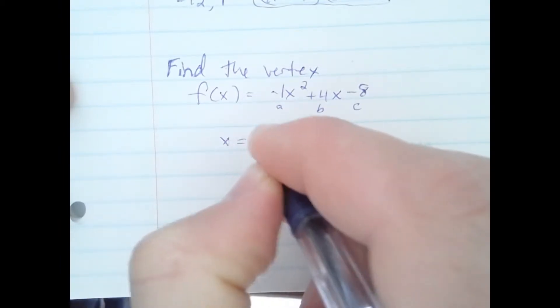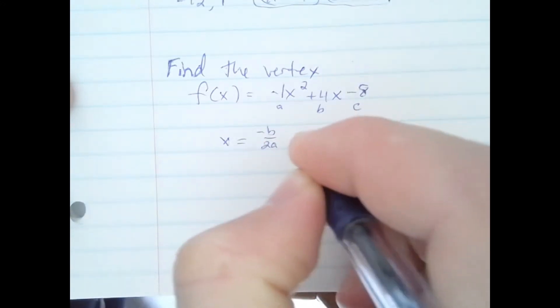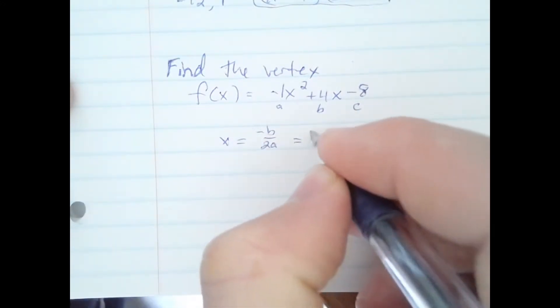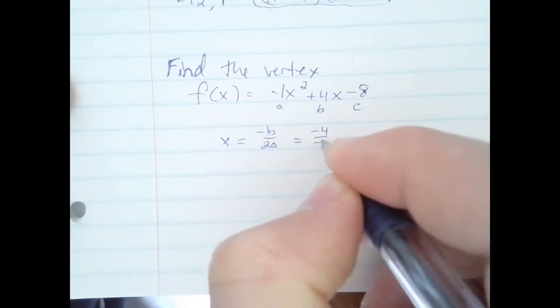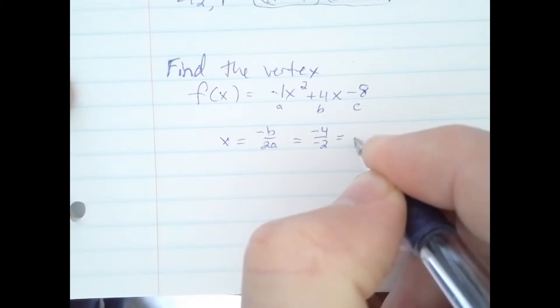Vertex has the formula negative b over 2a. That is the x coordinate of the vertex. So here it would be negative 4 over negative 2, 2 times the negative 1, and that gives us 2.